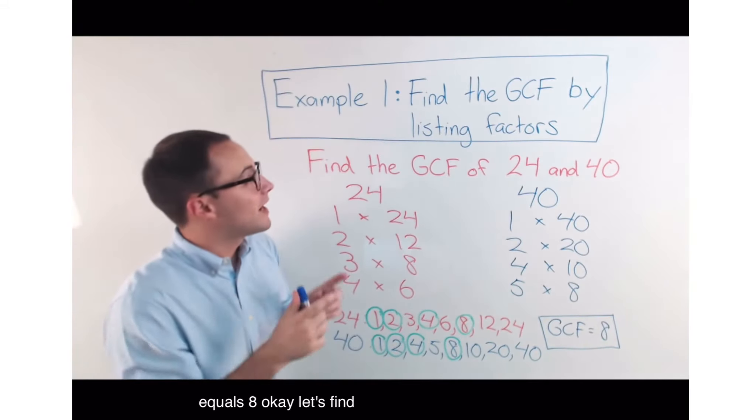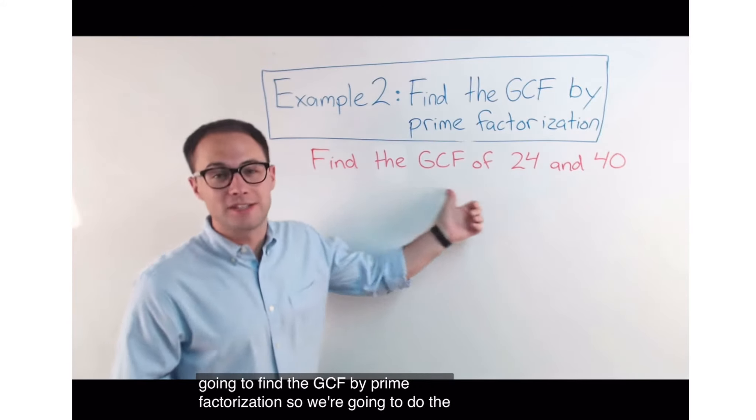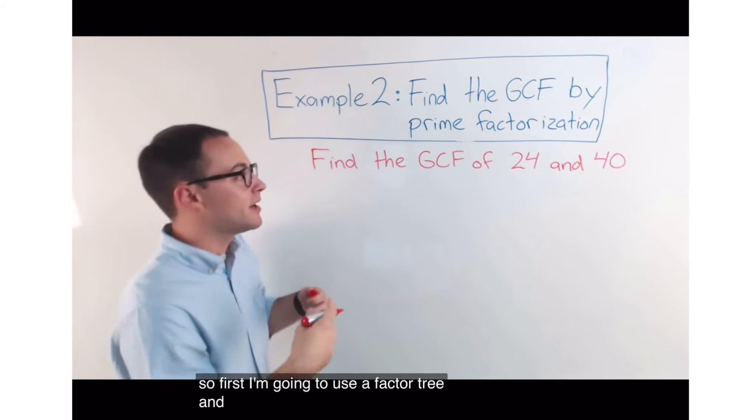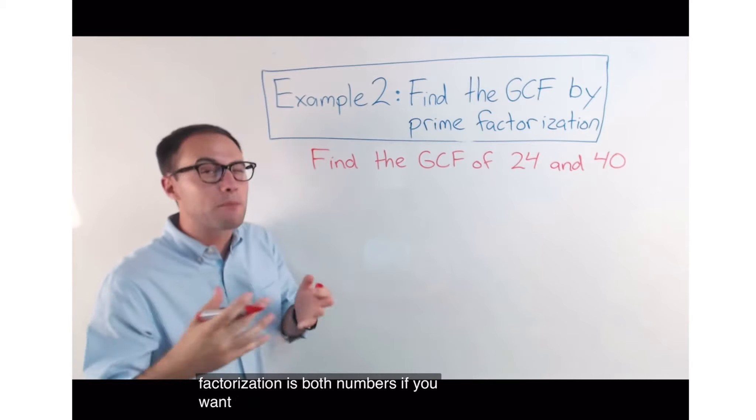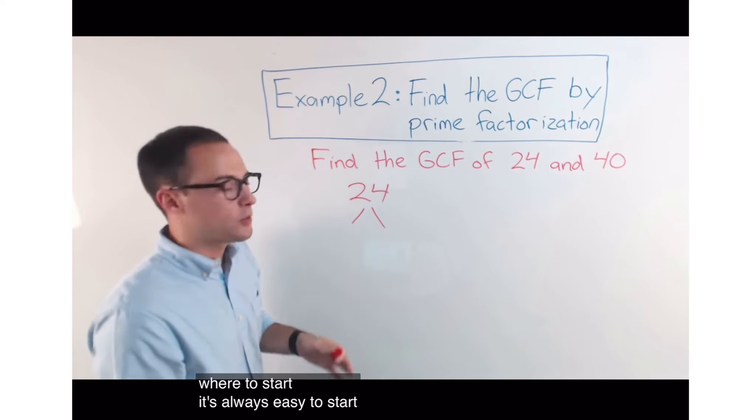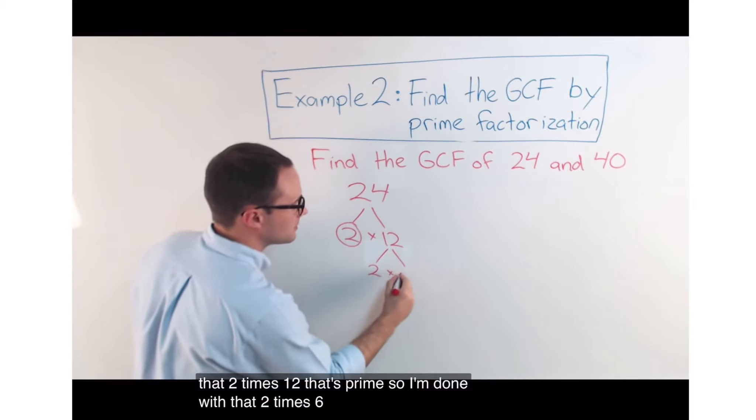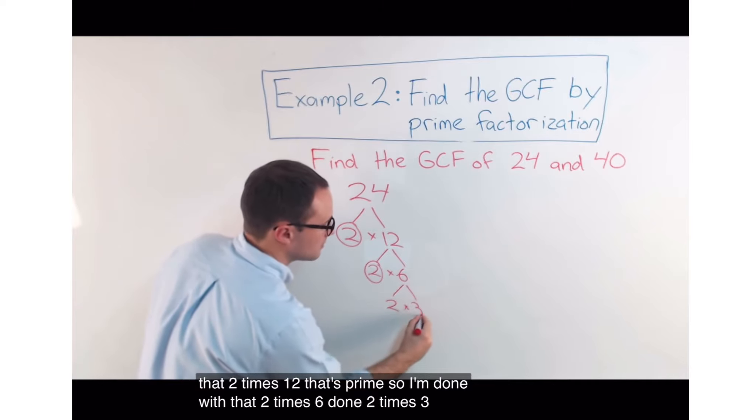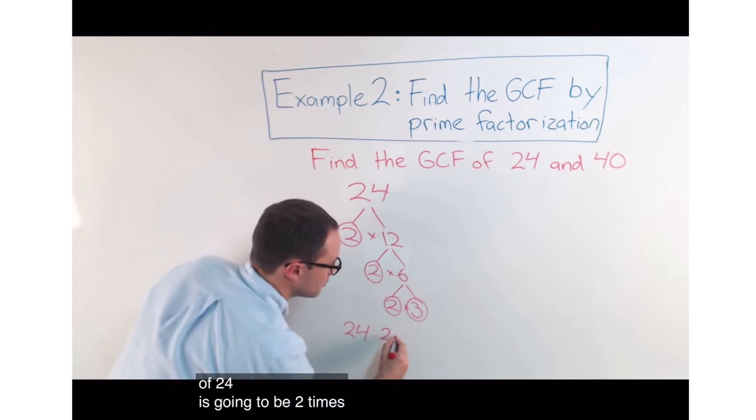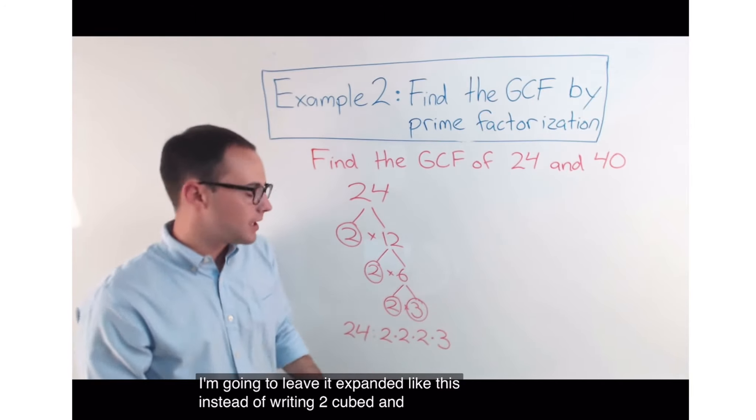Equals 8. Okay. Let's find the GCF using another strategy. For example 2, we're going to find the GCF by prime factorization. So, we're going to do the same exact problem and just solve it a different way. Find the GCF of 24 and 40. We're going to use prime factorization. So, first, I'm going to use a factor tree and figure out what the prime factorization is of both numbers. If you want to pause it and try to do it on your own, go for it. So, for 24, I've got lots of options of where to start. It's always easy to start with 2 when you have even numbers. So, I'm going to do that. 2 times 12. That's prime. So, I'm done with that. 2 times 6. Done. 2 times 3. Done. And done. So, my prime factorization of 24 is going to be 2 times 2 times 2 times 3. I'm going to leave it expanded like this instead of writing 2 cubed and you'll see why in a second.